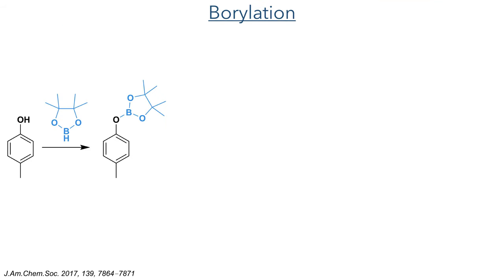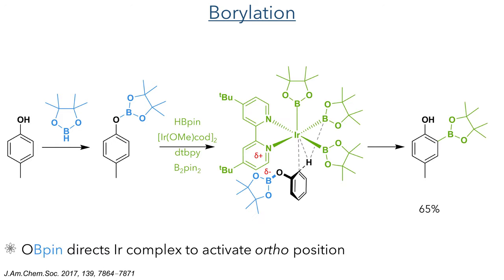With this triflate constructed, they could then generate the other coupling partner required for the Suzuki reaction. Paracresol was borylated using pinacol borane, which served as a directing group for the ortho C-H activation. This was carried out using an iridium complex featuring a di-tert-butyl bipyridine ligand and several pinacol borane ligands. This is directed to the ortho position by electrostatic interactions and allows it to activate the C-H bond and thereby functionalise it with pinacol borane. The borane group on the oxygen atom is cleaved during workup, producing the target in a 65% yield.